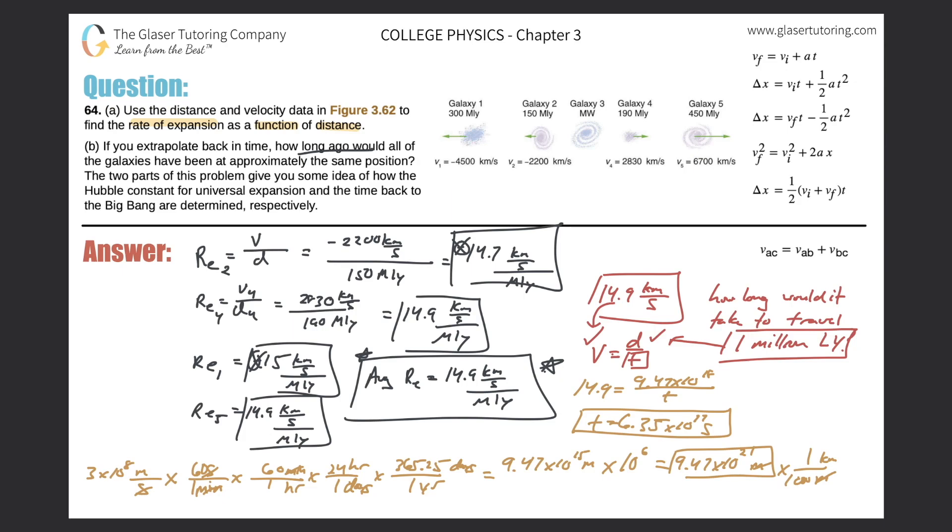That's the time it would have taken to travel 1 million light years if the rate of travel was 14.9 kilometers per second. So essentially, this is how long it took from the Big Bang. That's fine, that's an answer, but we probably want to frame it in years. Even though we have a time, we're not used to giving it in seconds. So let's put it in terms of years.